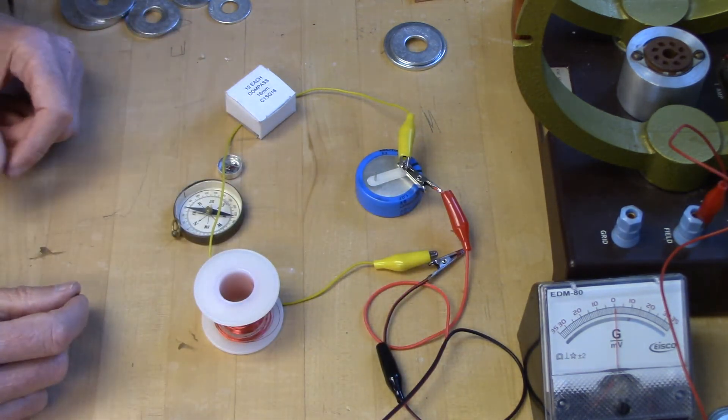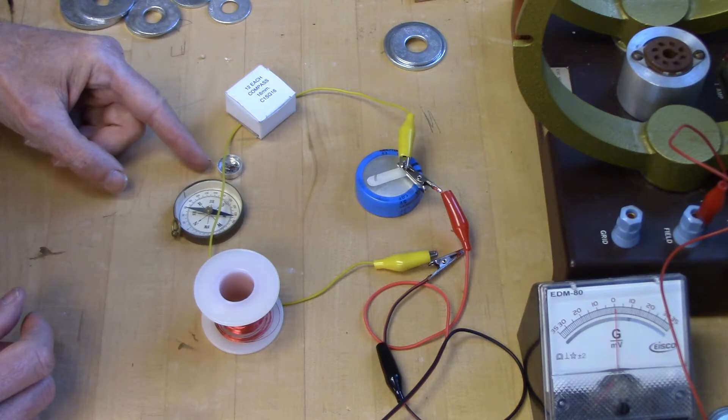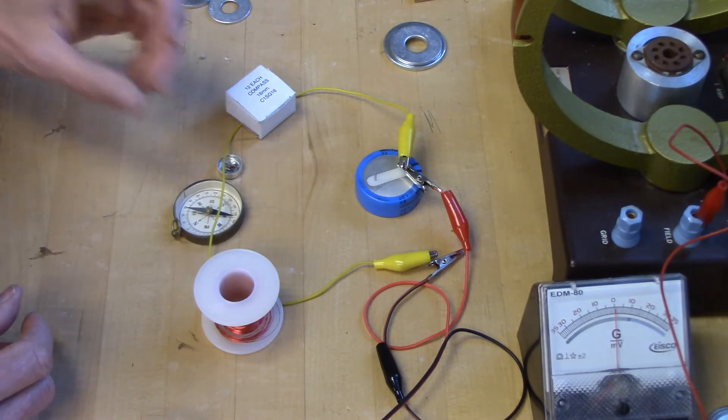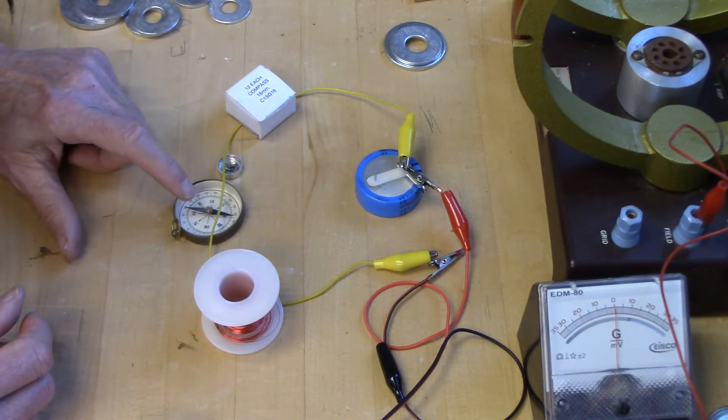Okay, so we saw that this compass—it's a little hard to see what it did, it's small—but the main thing is it was reacting a lot more to the magnetic field created by this wire, created by the current in the wire, than this one was.